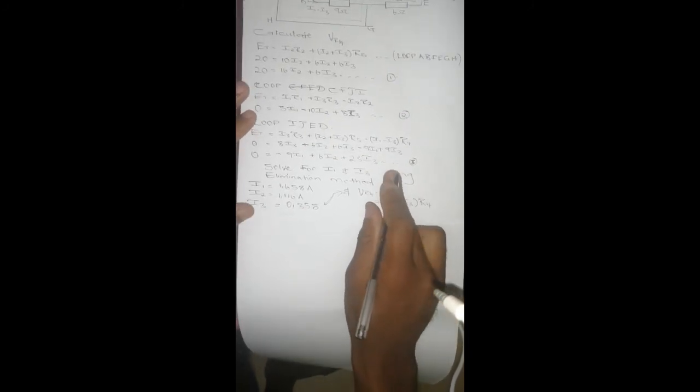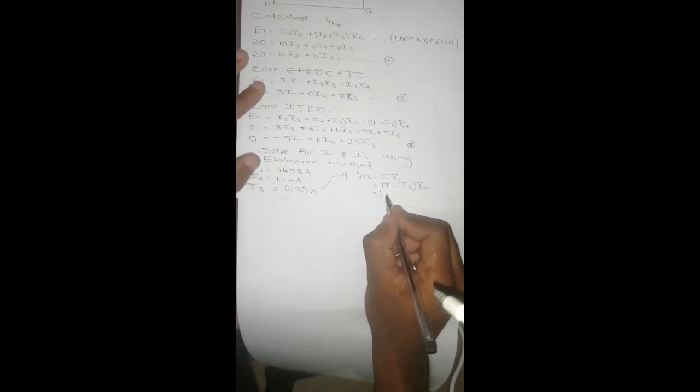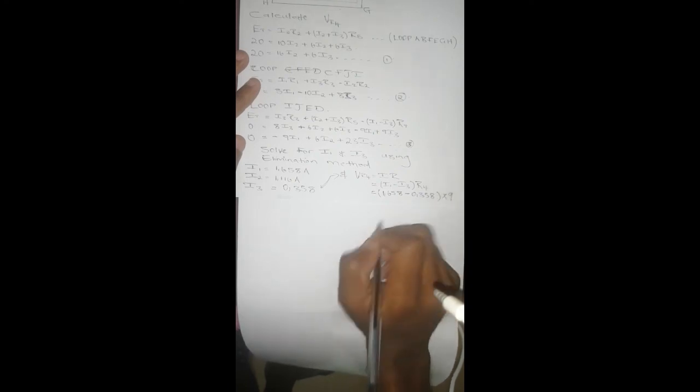VR4 equals IR. In this case our I is going to be (I1 minus I3) times R4. This is going to be 1.658 minus 0.358 times 9. This is going to give us VR4 equals 1.3 times 9, and this is 11.7 volts. And that's it.